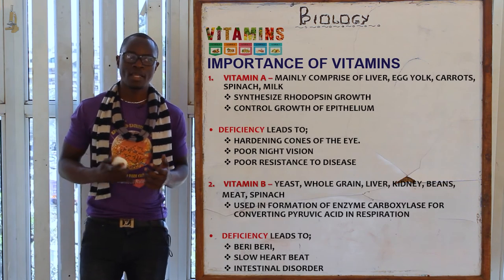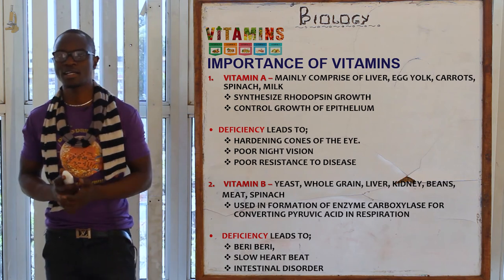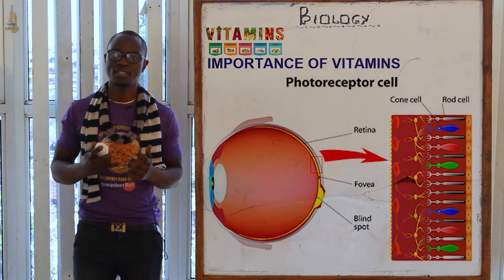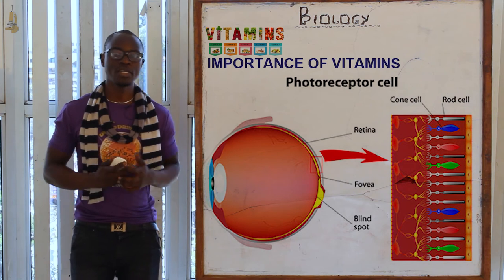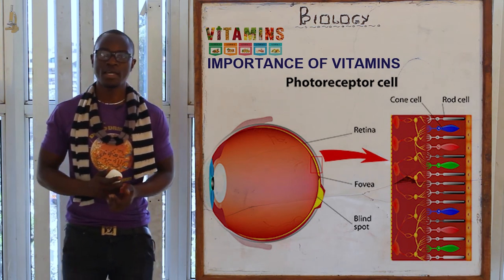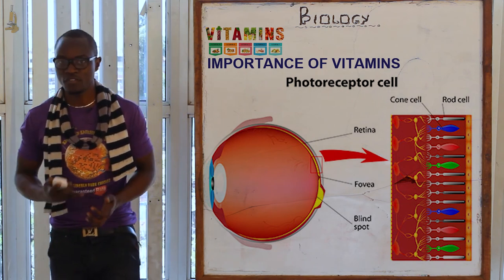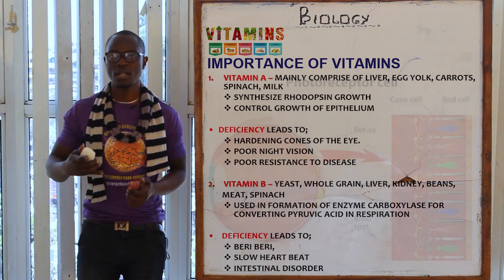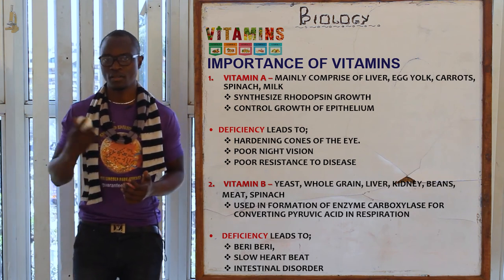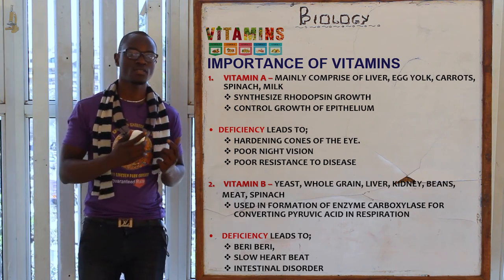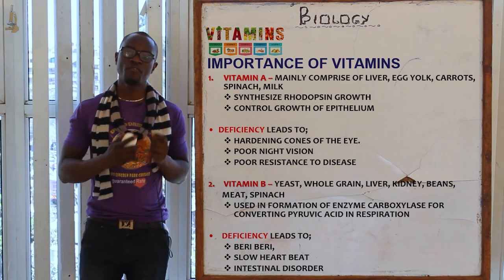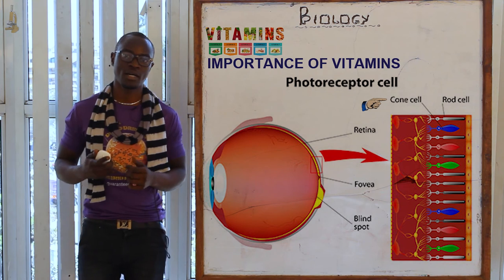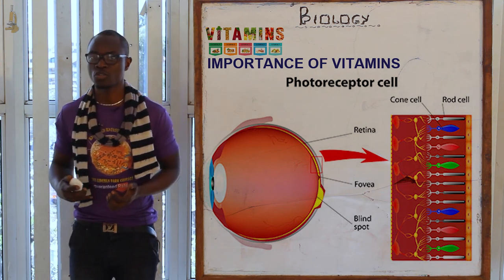Vitamin A is found in liver, eggs, carrots, milk, and spinach. Its function is to synthesize rhodopsin, which assists in vision — the more carrots you take, the more you build your eyesight. Vitamin A also controls the growth of the epithelium. Deficiency of vitamin A leads to hardening of the cones in the eye; cones control vision in high-intensity light while rods control low-intensity vision.